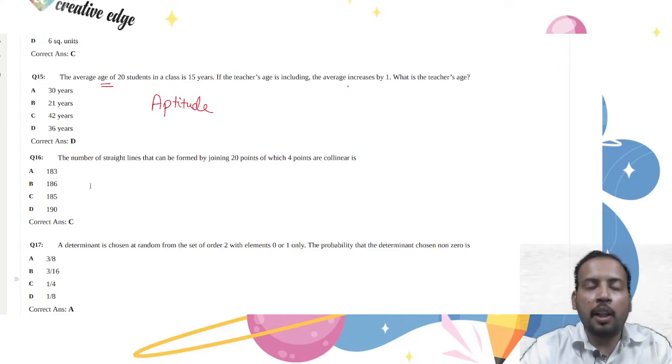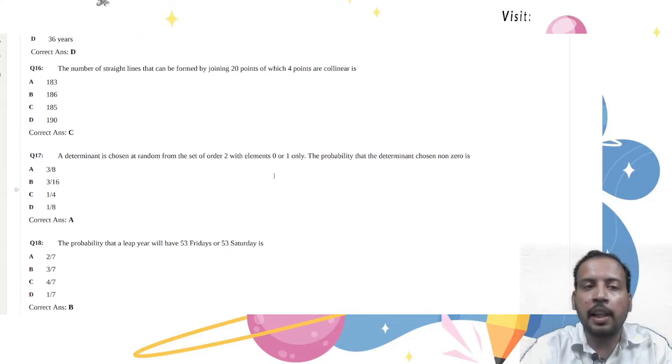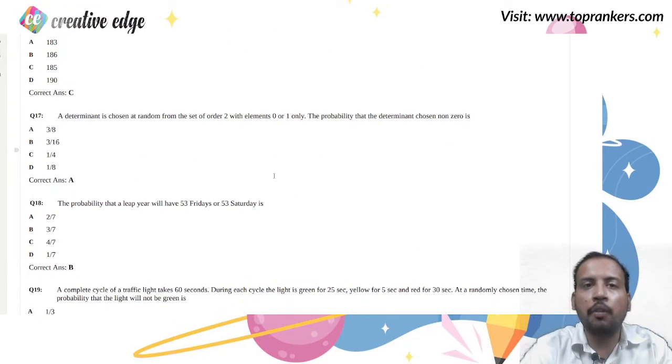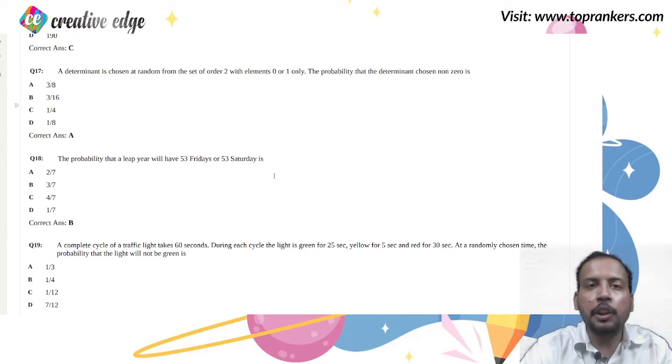Question number 16 is the number of straight lines that can be formed by joining 20 points of which 4 points are collinear. This question is from permutation and combination, a very basic question of class 11th. The next question is of class 11th or 12th, that is determinant. Very basic questions are being asked from 11th and 12th.